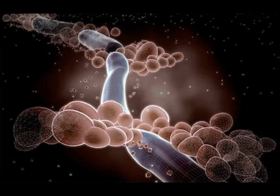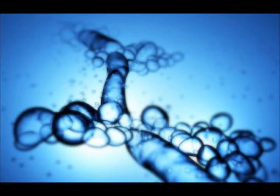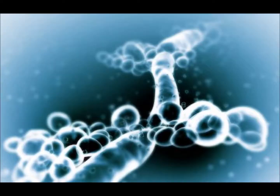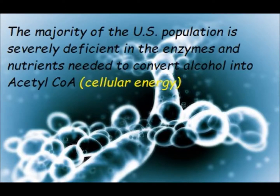When you feed sugar to yeast, the byproduct is alcohol. Under ideal circumstances, the alcohol from Candida, just like any alcohol you might consume, is converted to acetaldehyde, which is then oxidized to acetic acid, and eventually to acetyl-CoA, which is used for cellular energy. Unfortunately, this isn't always what happens. The majority of our population is severely deficient in various nutrients and enzymes necessary to quickly and efficiently make this conversion.